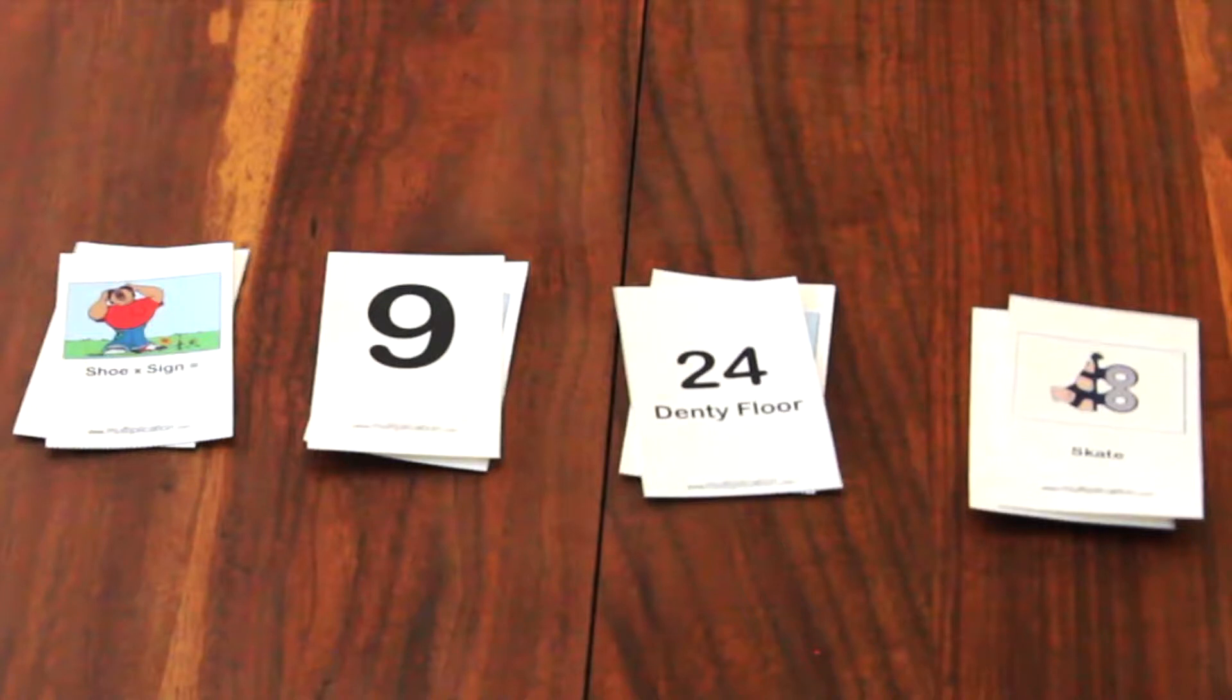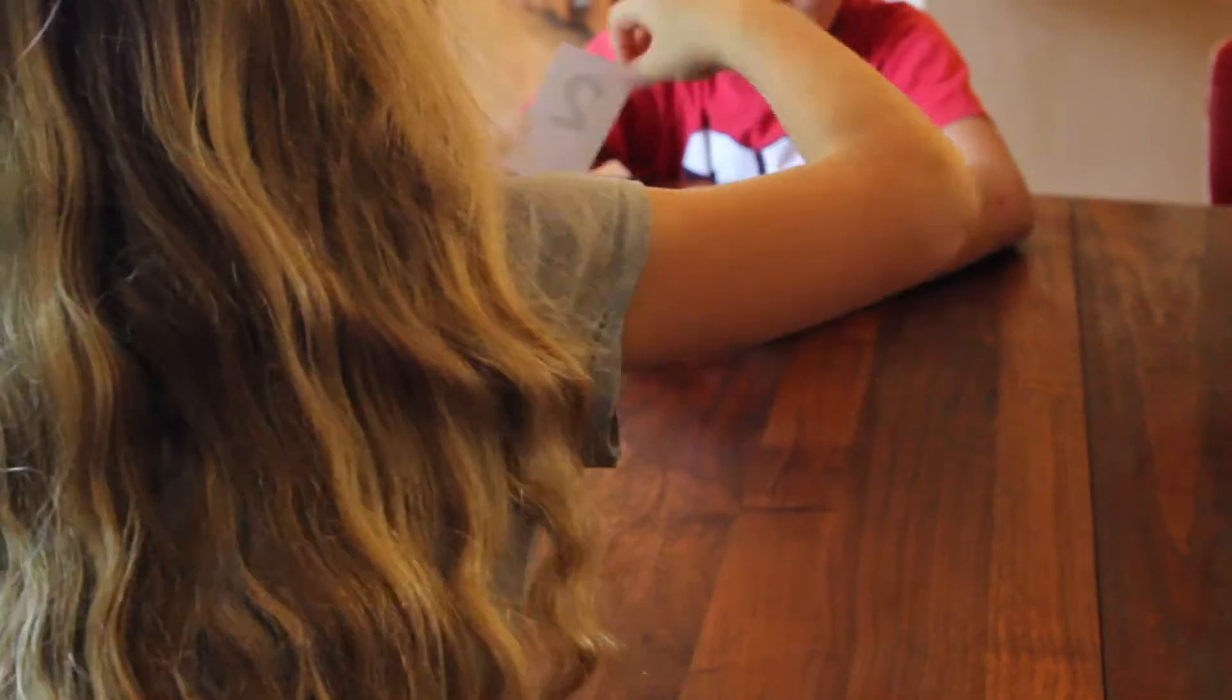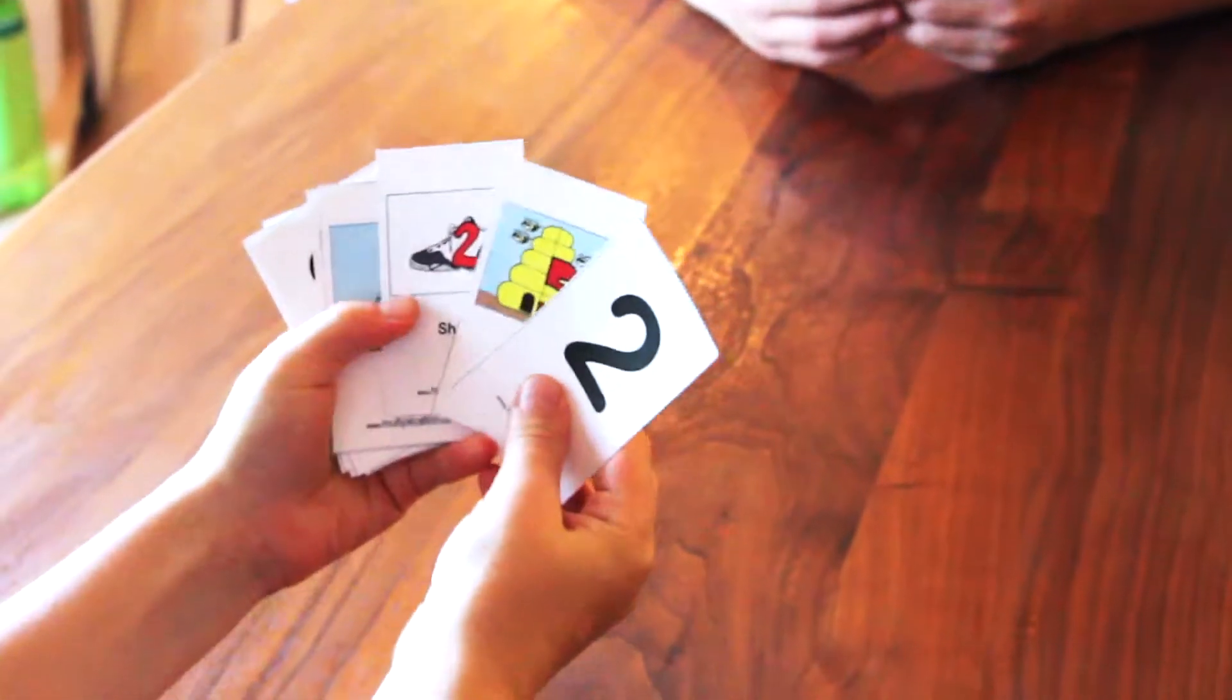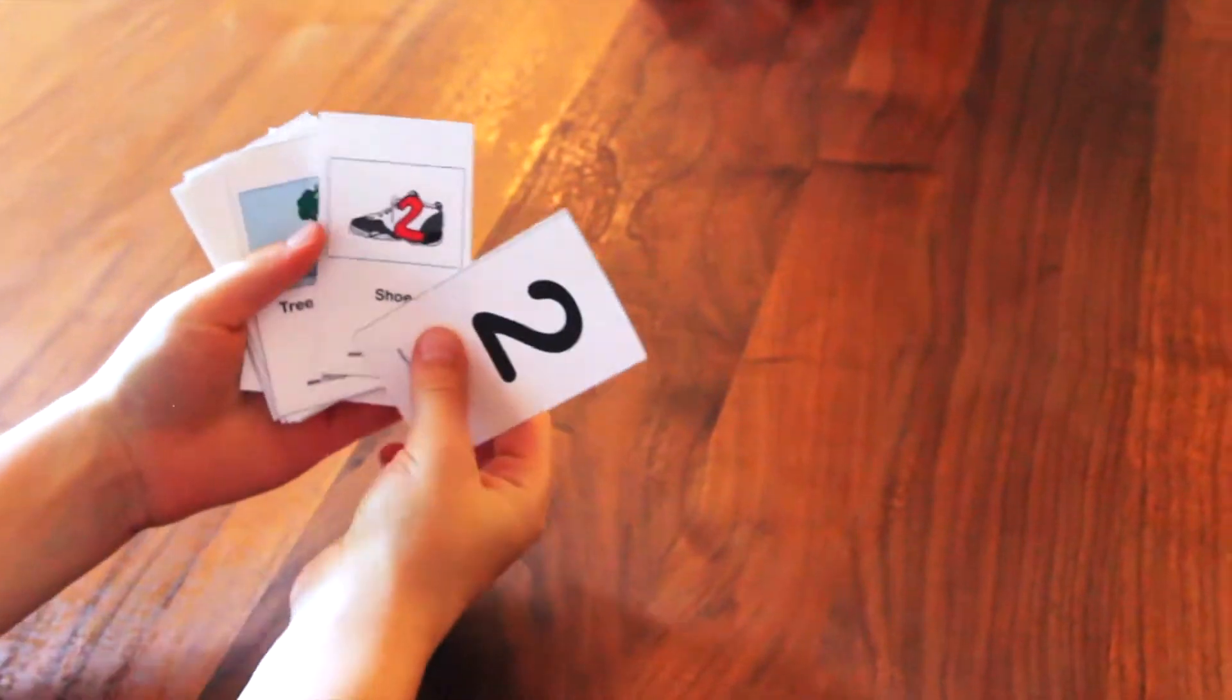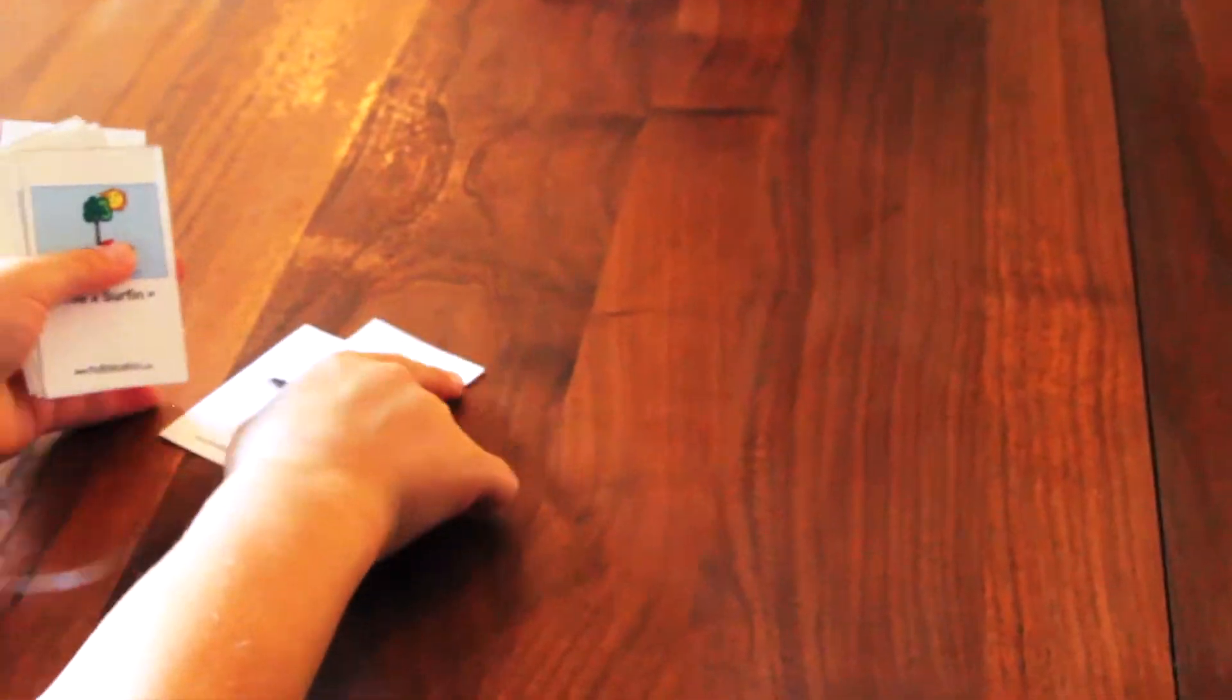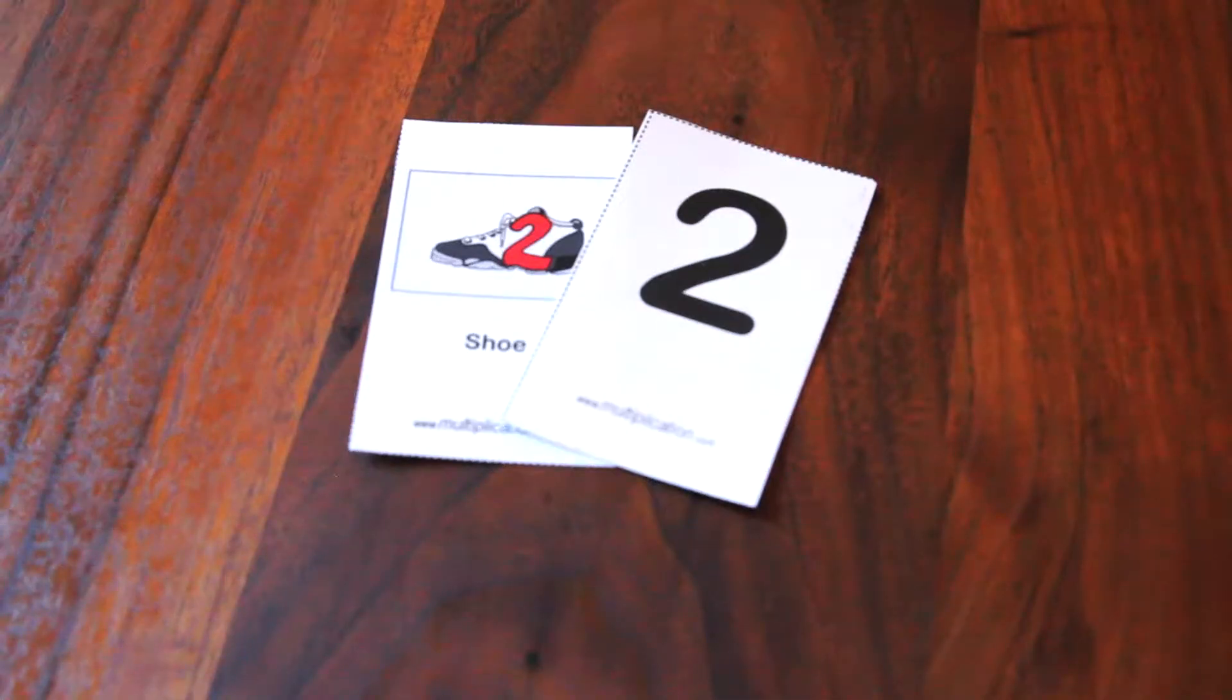When each player has removed their matches, the first player offers their hand to the player next to them and a card is drawn. If a pair is formed by the drawing of a card, the match is discarded immediately to the table.